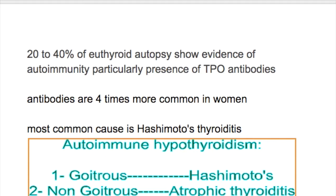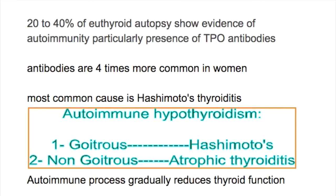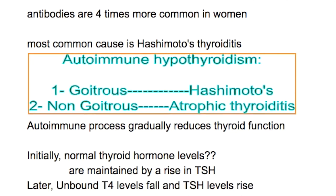What are the types of autoimmune hypothyroidism? It may be goitrous or non-goitrous. Goitrous autoimmune hypothyroidism is Hashimoto's thyroiditis, and non-goitrous is atrophic thyroiditis. Atrophic thyroiditis is actually an advanced form of Hashimoto's thyroiditis, where the autoimmune process gradually reduces the thyroid function.